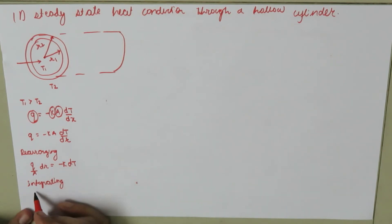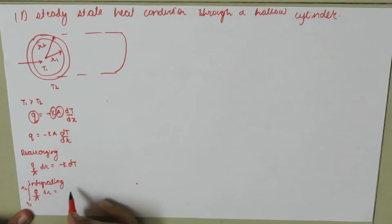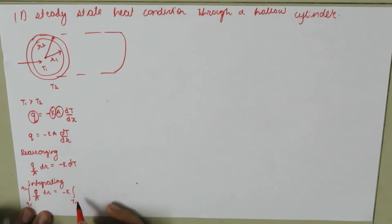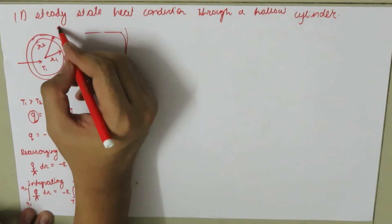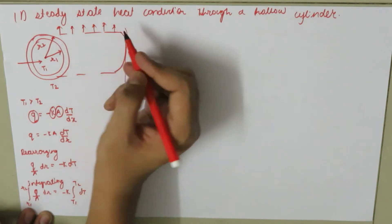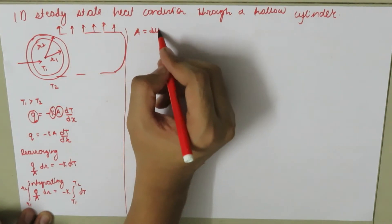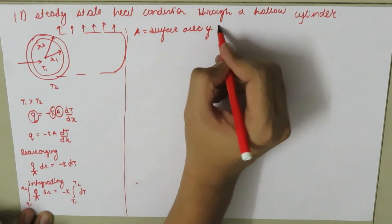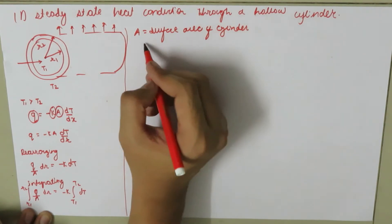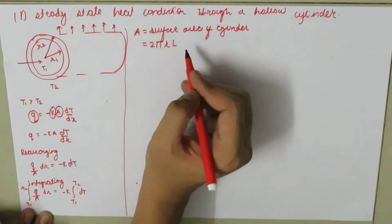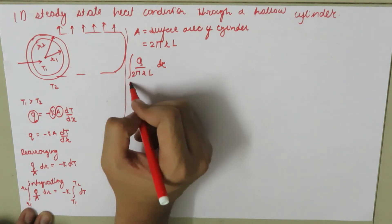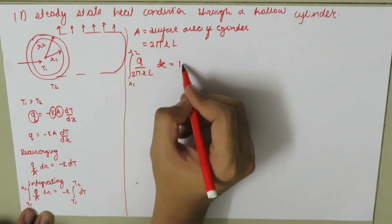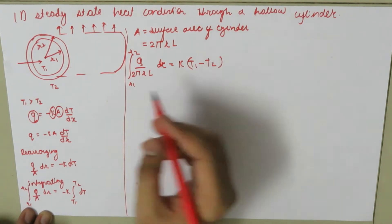Integrating both sides, we get Q/A integrated from R1 to R2 dr equals negative K integrated from T1 to T2 dT. The heat transfers along the surface of the cylinder, so A is the surface area of the cylinder, equal to 2πr times the length L. Therefore, Q/(2πrL) dr integrated from R1 to R2 equals K(T1 minus T2).